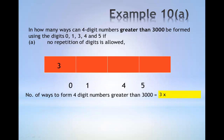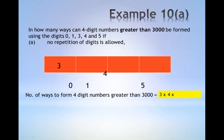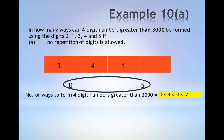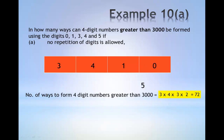For example, 3. The second digit can be any of the 4 choices: 0, 1, 4 or 5 — for example, 4. The third digit can be any of the remaining 3 digits: 0, 1 or 5 — for example, 1. The last digit can be either 0 or 5 — for example, 0. This gives 72 in total.